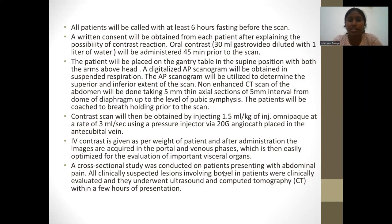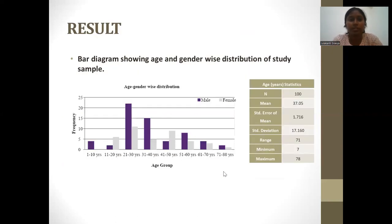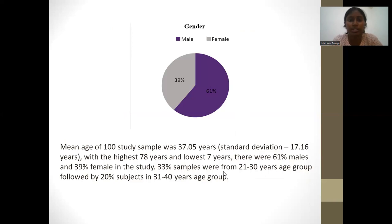A cross-sectional study was done on patients presenting with abdominal pain; all clinically suspected bowel lesions were evaluated, and patients underwent both ultrasound and computed tomography within a few hours of presentation. The results show a bar diagram of age and gender-wise distribution of the study sample. The mean age of the 100 study subjects was 37 years, with a standard deviation of 17.16 years, a maximum of 78 years and minimum of 7 years. There were 61% males and 39% females. 33% of samples were from the 21–30 years age group, followed by 20% from the 31–40 years age group.